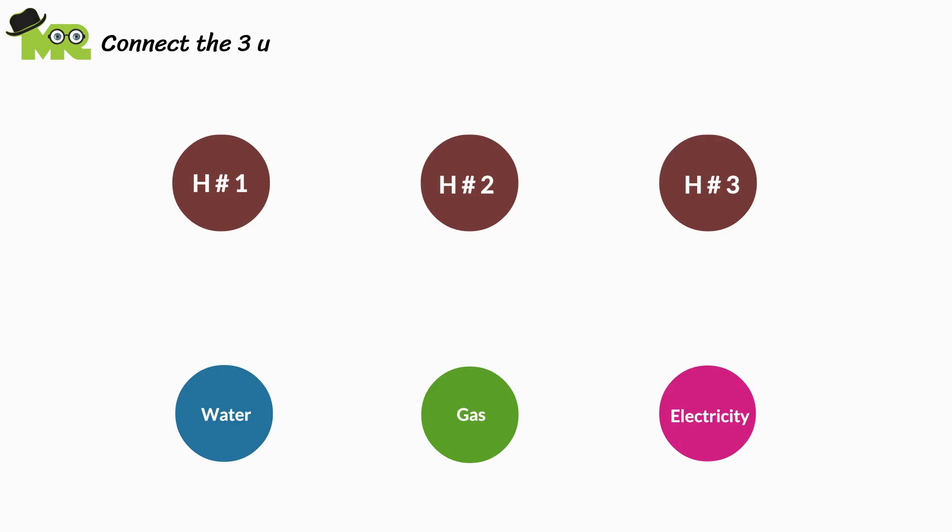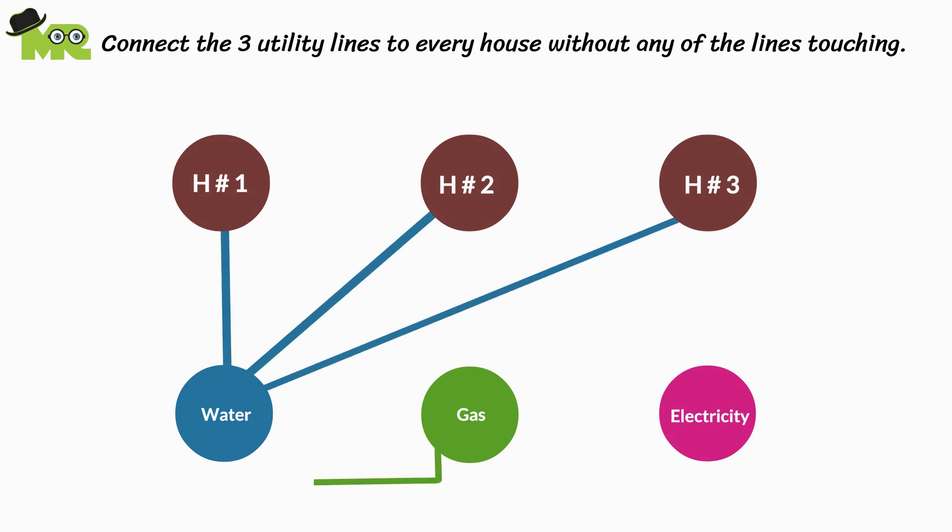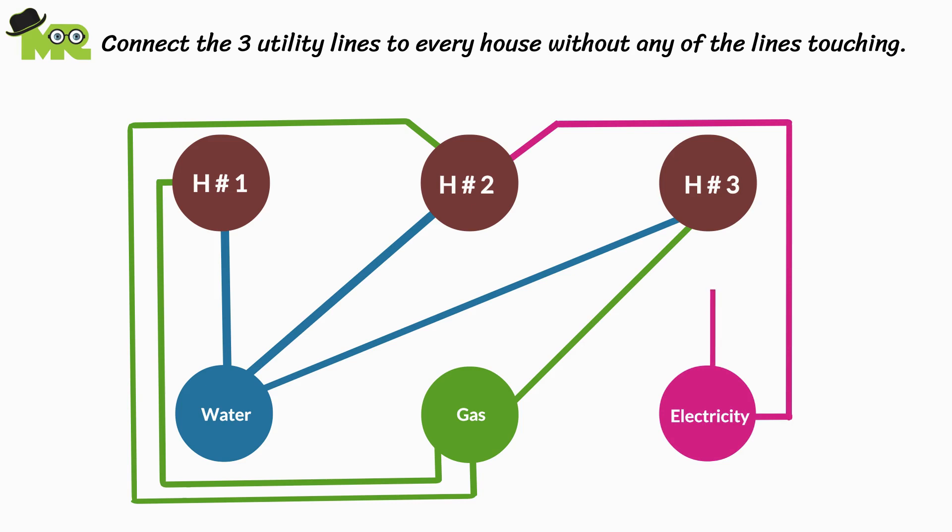There are three houses placed side by side in a new neighborhood. The main utility lines - a water line, a gas line, and an electricity line - must be set up to every house. Can you connect the three utility lines to every house without any of the lines touching or overlapping another line?